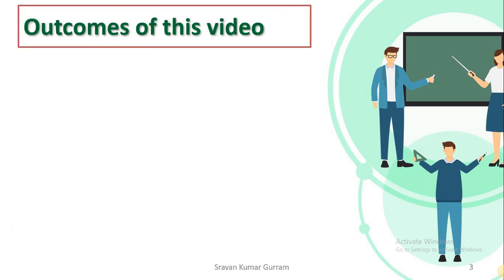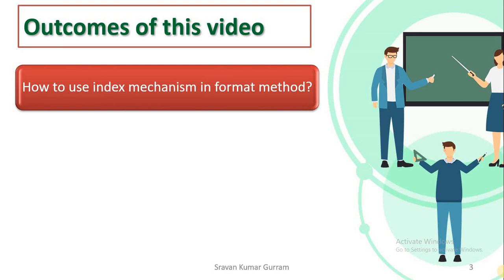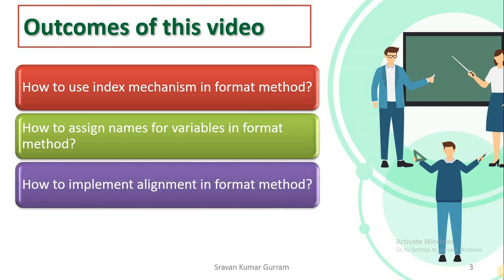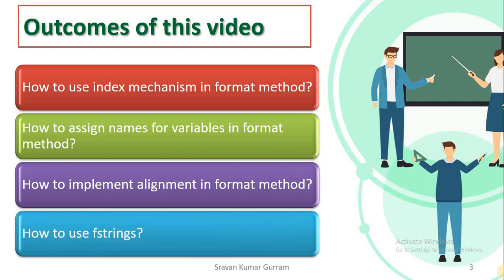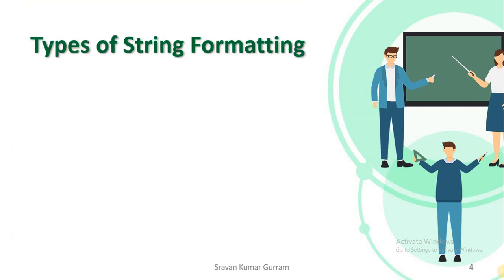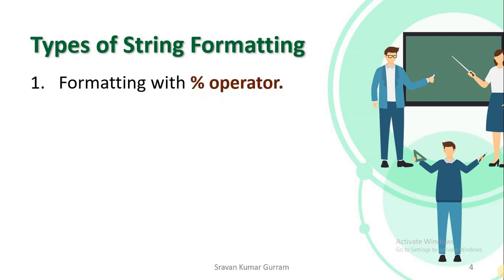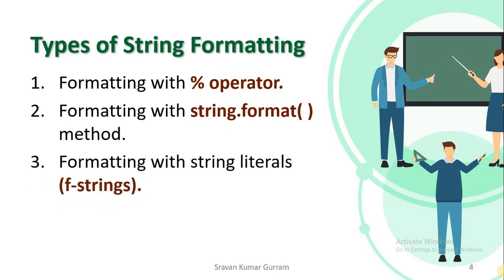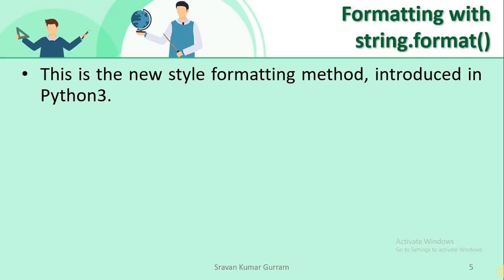After watching this video, you will be able to know how to use the index mechanism in the format method, how to assign names for variables in the format method, how to implement alignment in the format method, and how to use f-strings. We started our discussion about string formatting in the last video, where we covered the first method — formatting with format specifiers. The remaining two methods are string dot format method and formatting with string literals, also called f-strings.